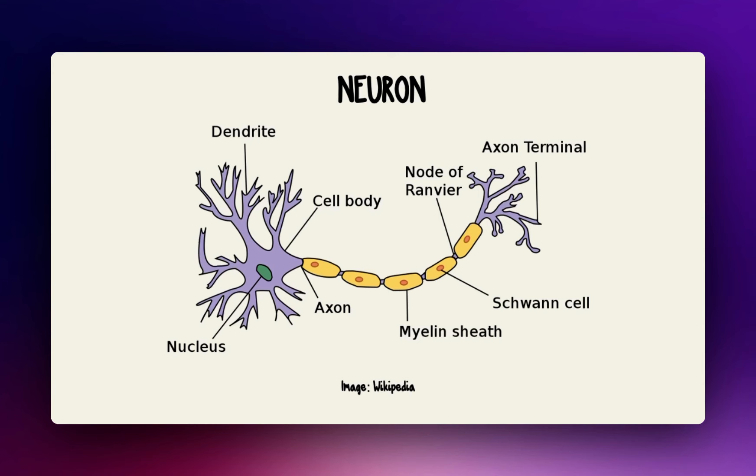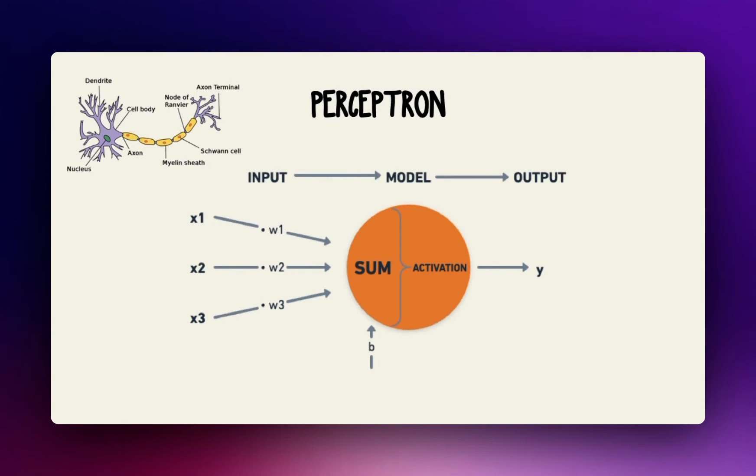Similarly, an artificial neuron takes input values multiplied by weights that indicate their respective importance, sums them up along with a static number called bias, passes them through an activation function that maps the result to an output between 0 (not activated) and 1 (activated).